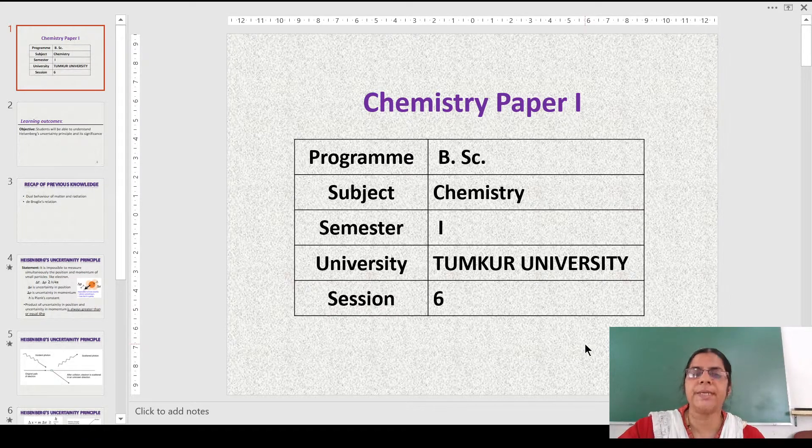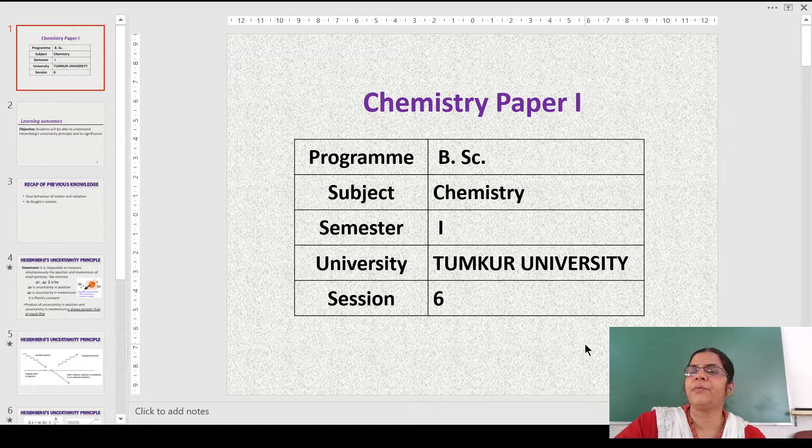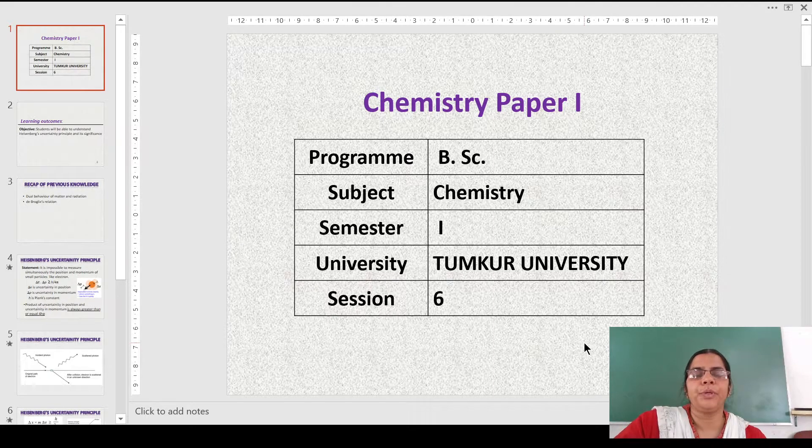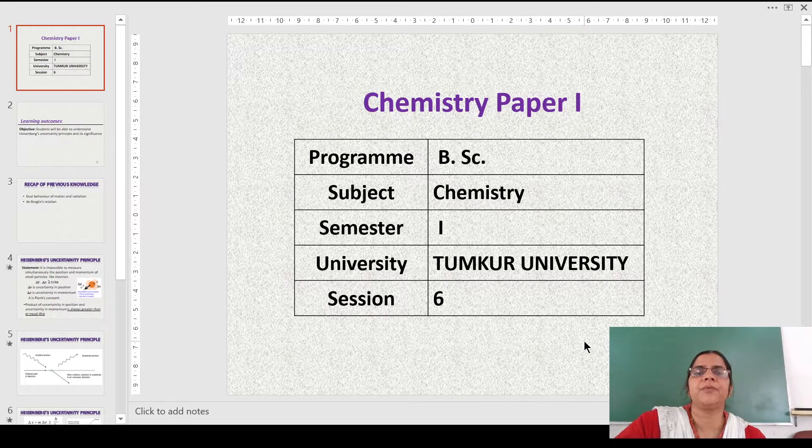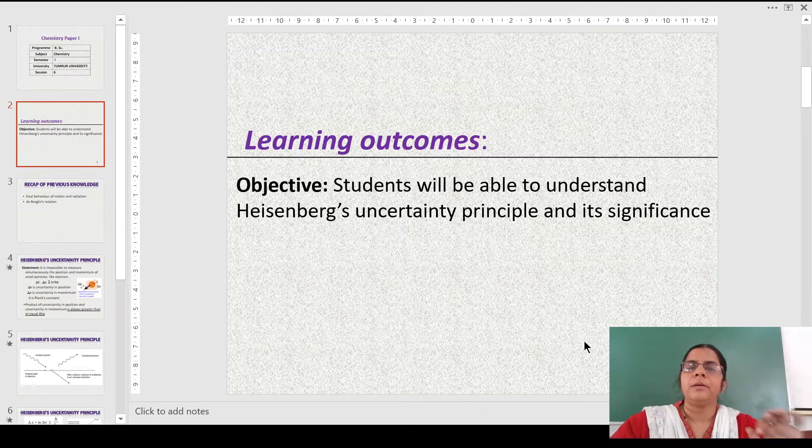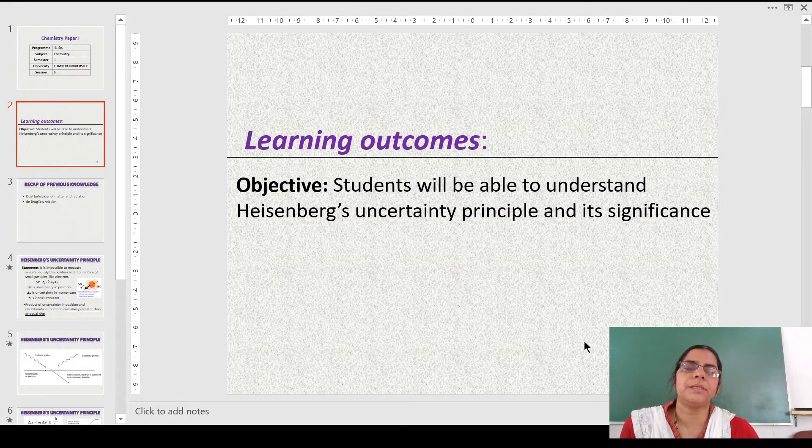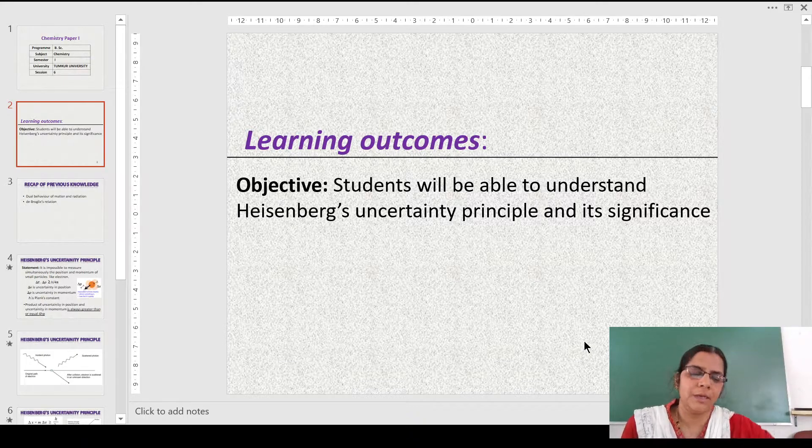In the previous video, we studied about the dual nature of matter. In the present video, we are going to talk about Heisenberg's Uncertainty Principle. This has been prescribed by the Tumkur University in the chapter Atomic Structure for First Year B.Sc. students. After going through this video, you are going to learn about Heisenberg's Uncertainty Principle and its significance.